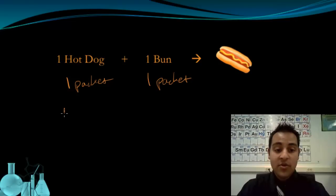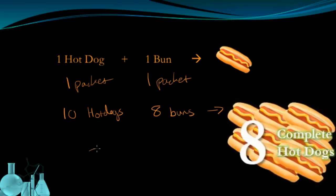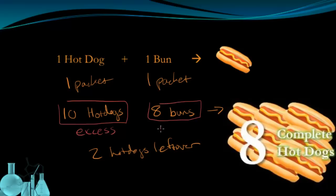In one packet of hot dogs, you get ten hot dogs. But in one packet of buns, you get eight buns. This means you can only make eight hot dogs, and you'll have two hot dogs left over. In this situation, we would say that the hot dogs, because they were left over, were in excess, and the buns were limiting.